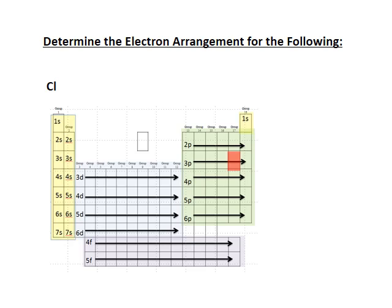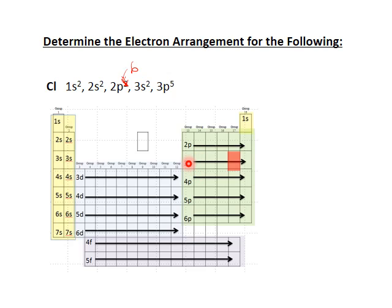For chlorine, which is further down the periodic table, we end in the 3p area. Starting from the beginning: 1s, 2s, 2p, loop back to 3s, and end in the 3p. In the 3p area I count five boxes over, so the last p orbital has five electrons. All previous s orbitals get two electrons, and the 2p gets six electrons.